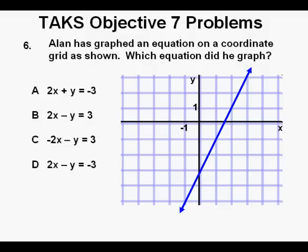Problem 6. Alan has graphed an equation on a coordinate grid as shown, which equation did he graph? We're trying to find out which one of these four equations matches the graphed line. Even though there are a lot of ways to do this problem, I like evaluating the form y equals mx plus b, which is the slope-intercept form of a linear equation found in our formula chart.